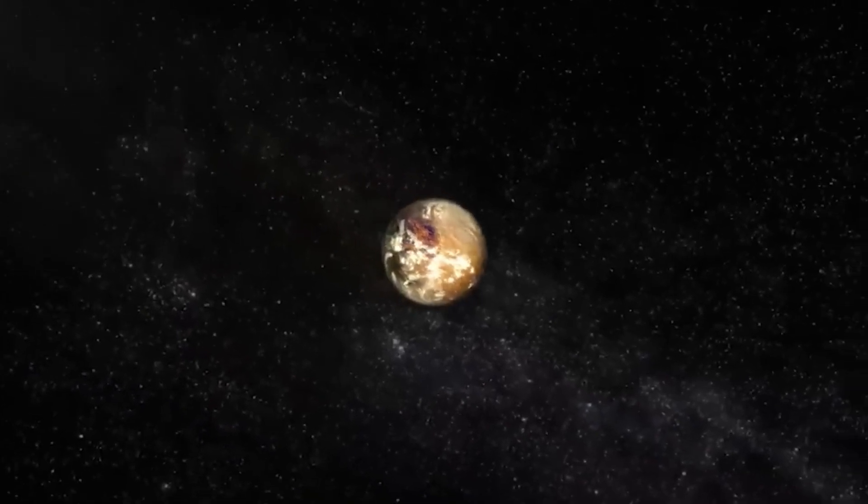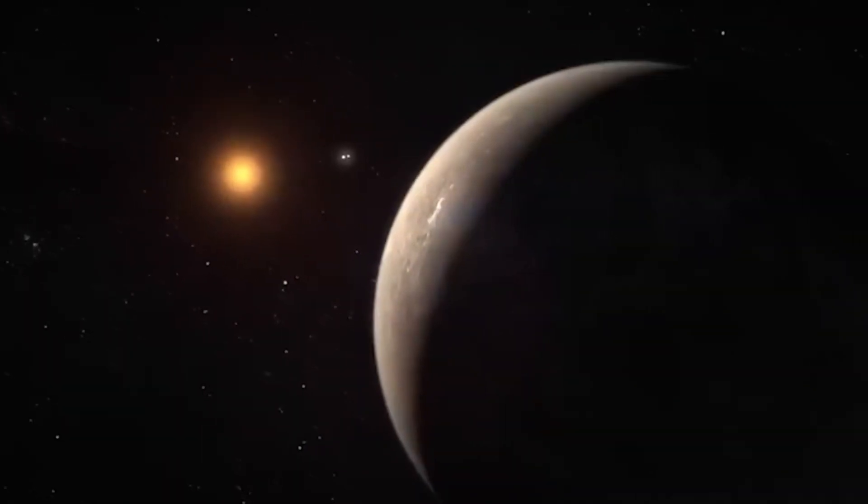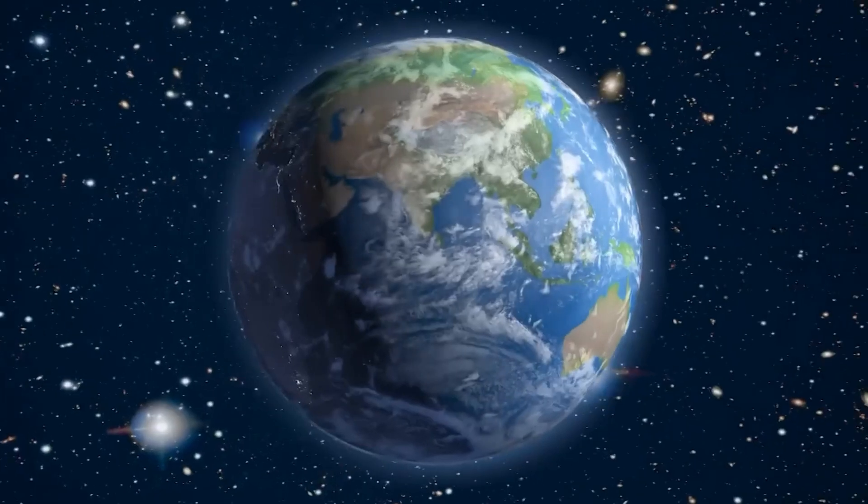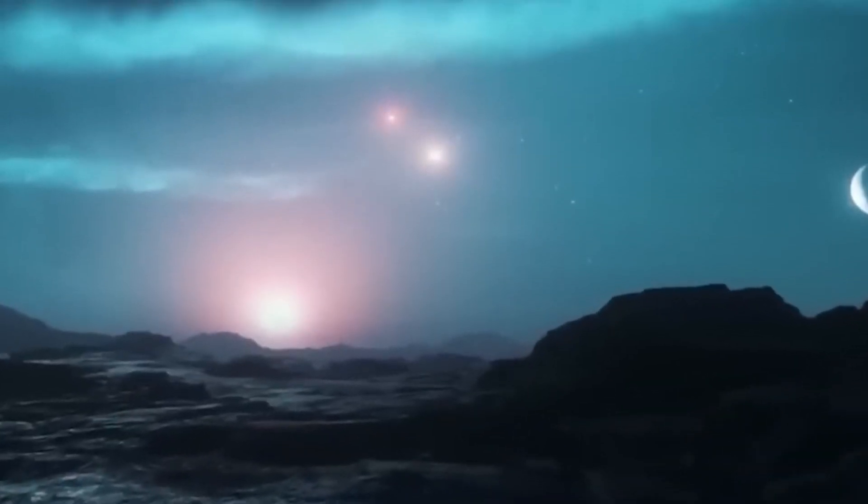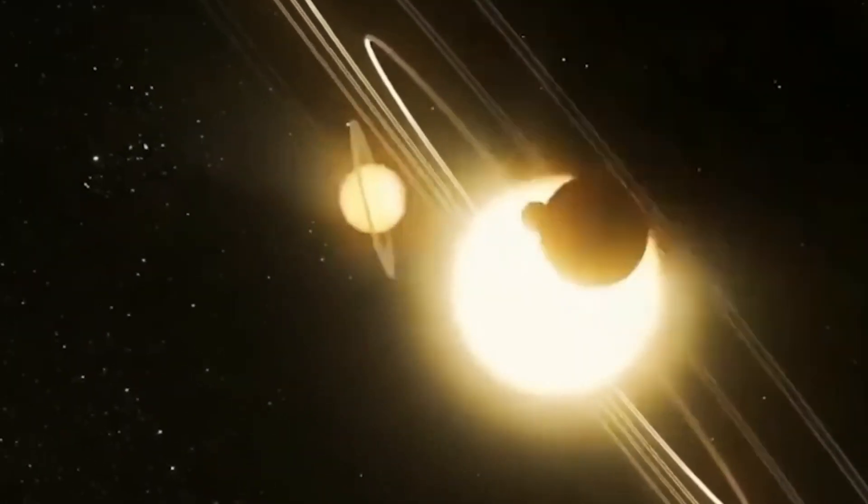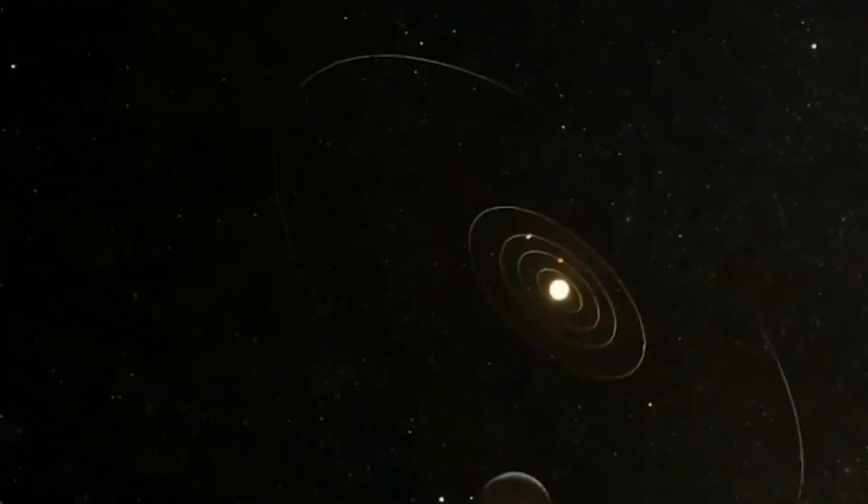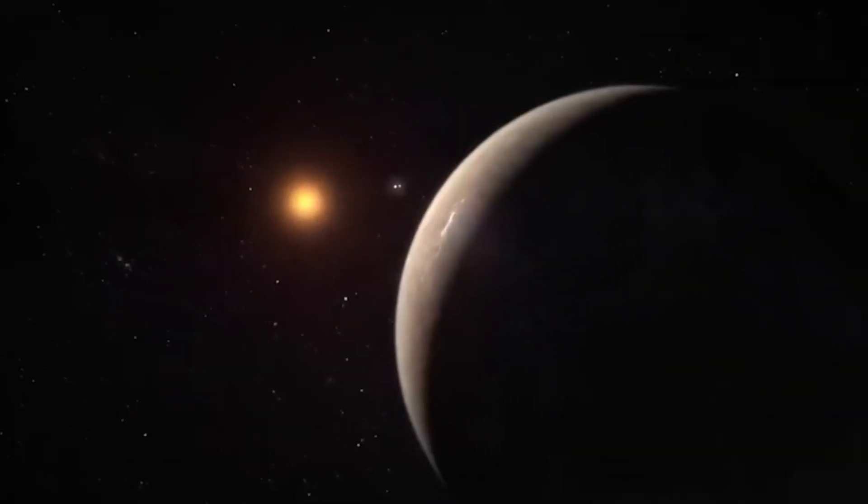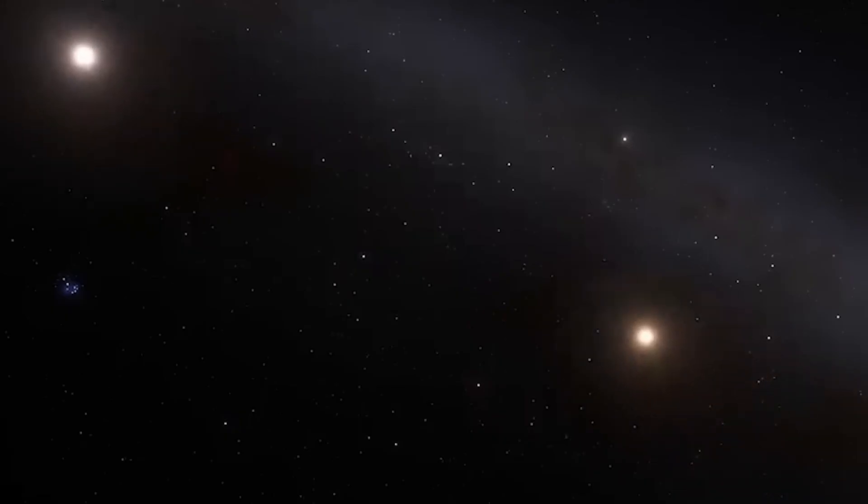Discovered in 2016, Proxima B lies in the star's habitable zone, also known as the Goldilocks zone, which is the region around the star where conditions could allow the presence of liquid water, a crucial ingredient for life as we know it. Proxima B's proximity to Earth and its location within the habitable zone have generated enormous interest and speculation about its ability to support life.